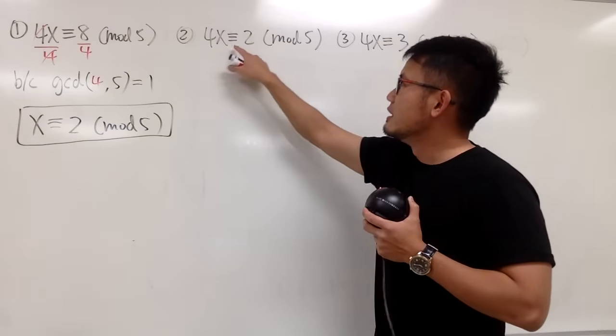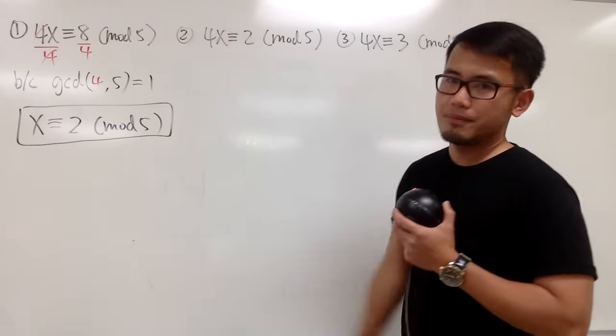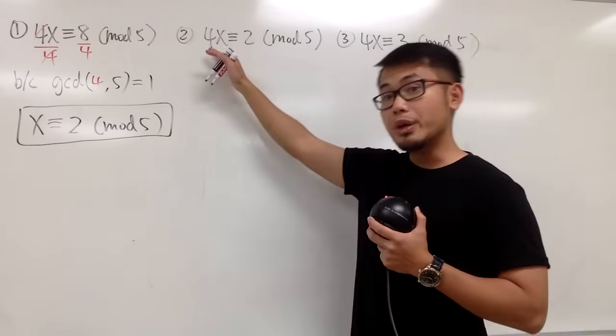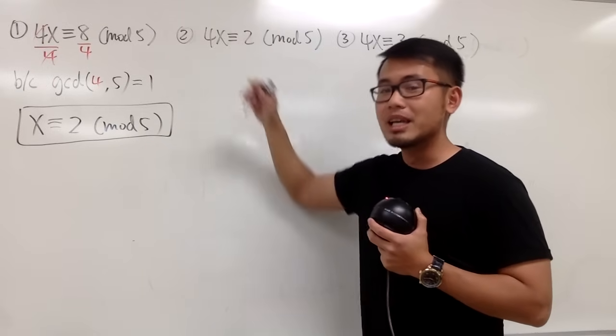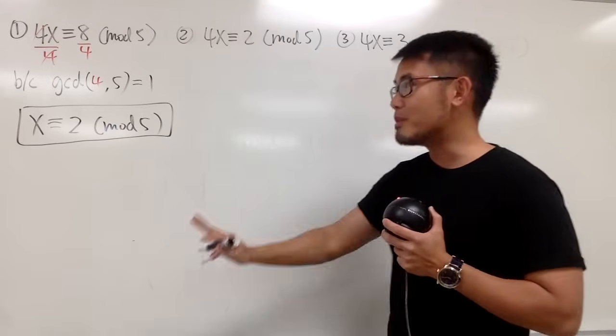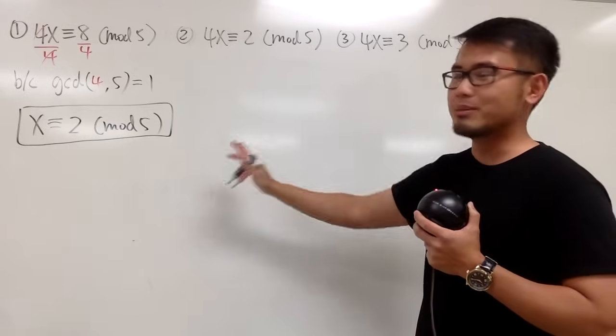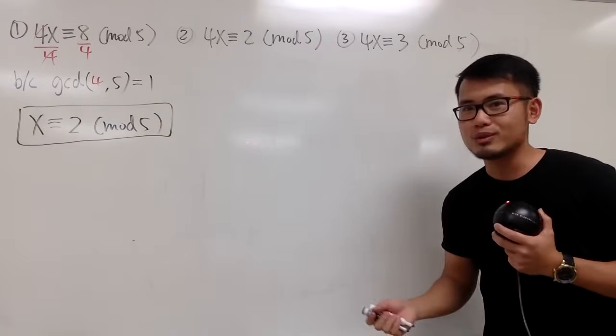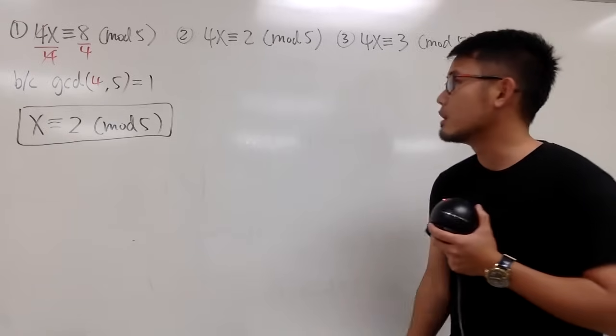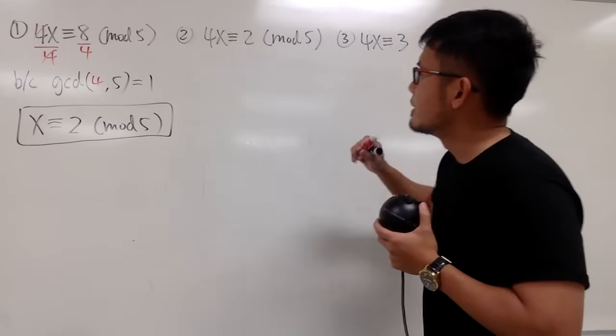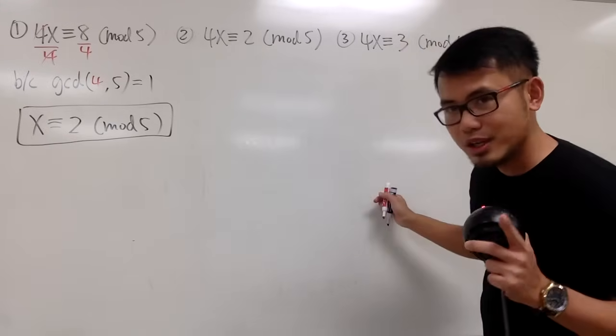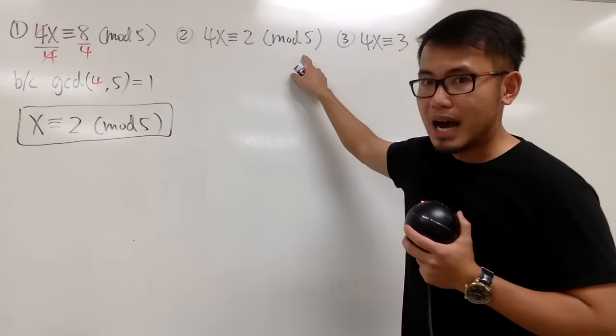Next, we have 4x is congruent to 2 mod 5. Well, in this case, we cannot just divide by 4 on both sides because 2 divided by 4 is 1 half. And remember, we are not doing fractions or decimals in the congruence world. So now we have to think about this carefully. Here, it's 4x. The deal is, we can do 4 mod 5.